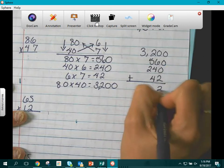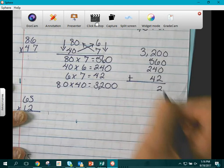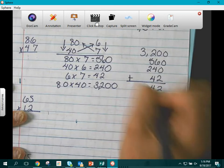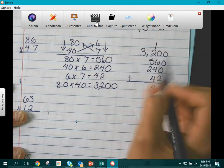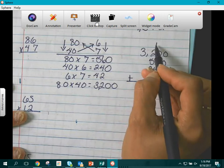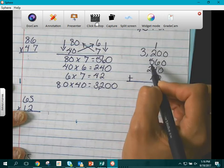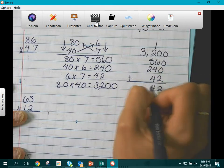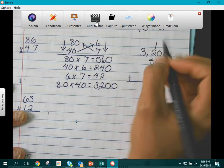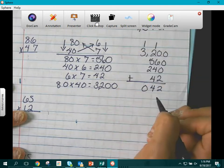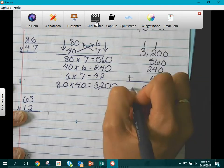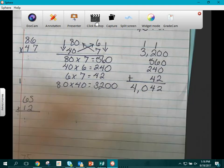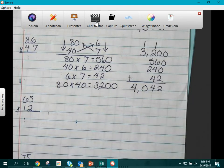So now we add 6 and 4 is 10. Plus 4 more will give us 14. Carry our 1. We have 1 and 2 is 3. Plus 5 more is 8. Plus 2 more is 10. Carry over. 1 and 3 is 4. So the product of 86 times 47 is 4,042.